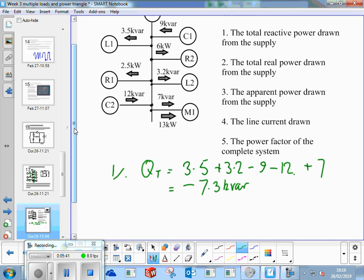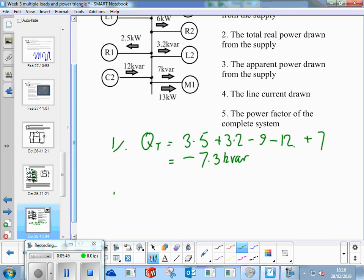We've got an overspend on capacitance here, but that's no worry, it's just an example. Second bit, find P total. We've got the 6 kW of R2 plus the 2.5 kW of R1 plus the 13 kW of the motor.